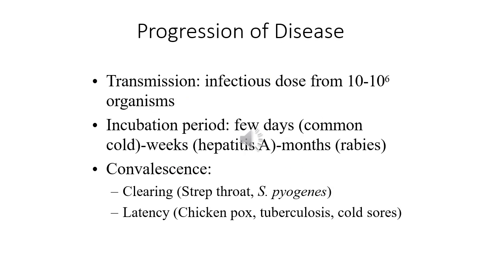Knowing about pathogen types, we discuss the progression of disease. One important term is infectious dose, which depends on the pathogen. For example, Shigella requires only around 10 to 100 microbes (10¹–10²) to cause disease, while Salmonella requires thousands. This difference reflects the pathogenicity or virulence of each particular microbe.